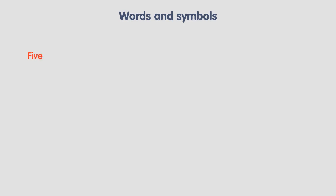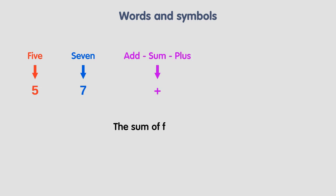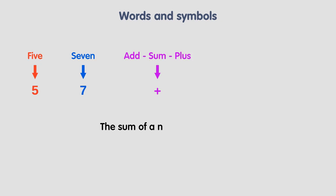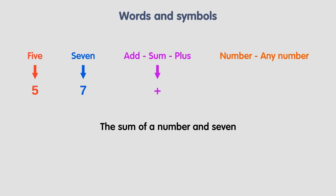Each symbol we use in mathematics has a name. We can even use different words to represent the same symbol. So if we say 'the sum of five and seven,' we can easily turn this text into the mathematical expression five plus seven. But what if we say 'the sum of a number and seven'? We use a variable — let's use the letter n — so 'the sum of a number and seven' turns into n plus seven.